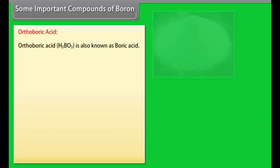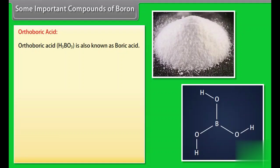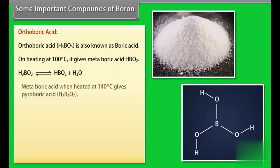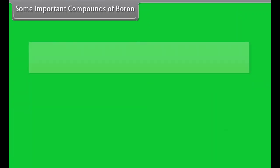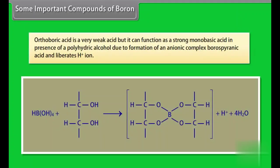Orthoboric acid. Orthoboric acid H3BO3 is also known as boric acid. On heating at 100 degrees Celsius it gives metaboric acid HBO2. Metaboric acid when heated at 140 degrees Celsius gives pyroboric acid H2B4O7, which when heated at high temperature gives B2O3. Orthoboric acid is very weak acid but it can function as a strong monobasic acid in presence of a polyhydric alcohol due to formation of an anionic complex borospiranic acid and liberates H+ ions.